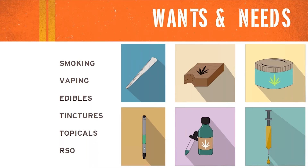For example, the connoisseur is probably going to like things that you can vape, the concentrates, or the flour for smoking, whereas a newer consumer is going to want maybe an edible to try, a tincture, or a topical. So just making sure that you have different methods of consumption and different varieties of product is really important, because you want to make sure that you're touching on every single customer that's coming in and providing the right product for your consumer.